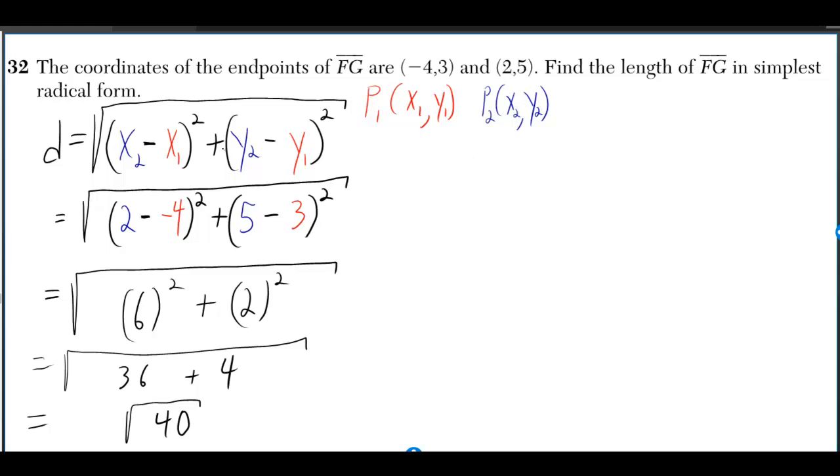Then we'll plug into the distance formula, which is not on the reference sheet. 2 minus a negative 4 becomes 2 plus 4, and that gives you 6. 5 minus 3 is 2. 6 squared is 36, 2 squared is 4. 36 plus 4 is 40.